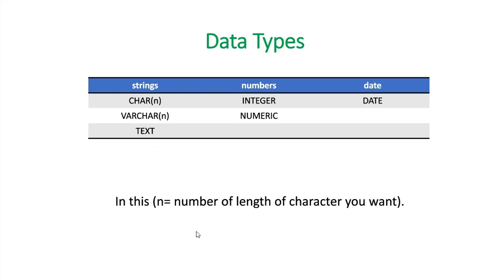The next data type is numbers. For numbers there are many available, like integer, numeric, bigint, smallint and others. For this table we are going to use integer and numeric only. Integer and numeric both store numbers but have their specific range. Both have their specific range of storing information.